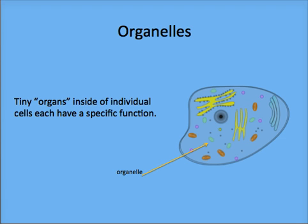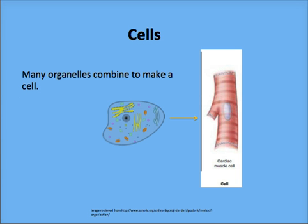Tiny organelles inside of individual cells each have a specific function. The DNA inside the cell determines what type of cell you will have. Many organelles combine to make a cell. There are many types of cells — in this case, we have muscle cells.